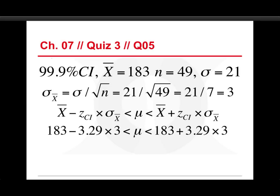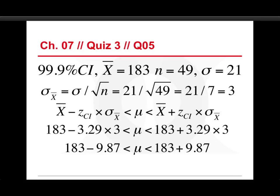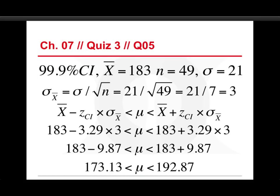Then we multiply that times the standard error, because remember, we're talking about units of standard error. Do the multiplication, you get 183 minus 9.87, or plus 9.87. And then run that through, and you get 173.13 is the low end of the 99.9 confidence interval, and 192.87 is the high end. And that's how you run through that particular example.